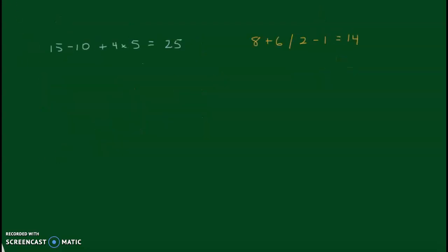For the practice portion, they are asking you to put in the parentheses to make this number statement true. When I do that, I like to just start from the left and work my way to the right. So if I have 15 minus 10, I have to do what's in parentheses first. That's going to be 5. And then I'm going to bring down the rest. So plus 4 times 5 equals 25.